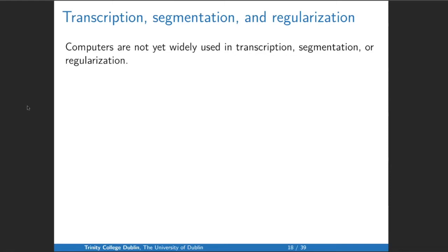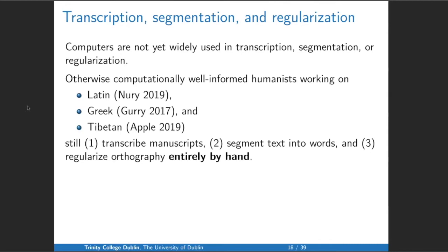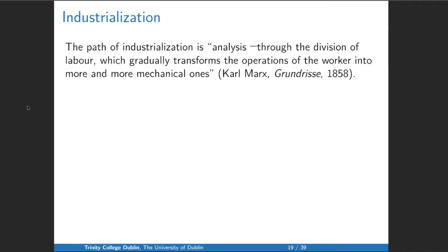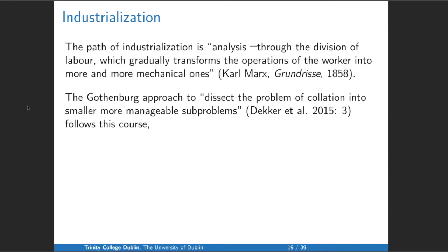Computers are not yet widely used in transcription, segmentation, and regularization. Even computationally well-informed humanists working on Latin, Greek, and Tibetan still transcribe manuscripts, segment the text into words, and regularize the orthography entirely by hand. The model we should turn to I like to call industrializing philology — we should get computers to do the actual hard work as much as possible. I turn for my theoretical framework here to Karl Marx, who says the path of industrialization is analysis through the division of labor, which gradually transforms the operations of the worker into a more and more mechanical one. The Gothenburg approach follows this course, but we must take their program further.